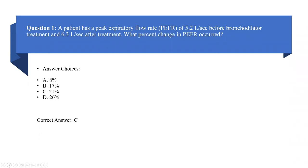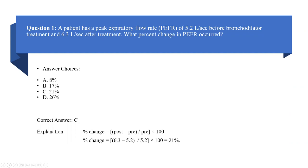The correct answer is C. The calculation for percent change is the post minus the pre — taking the absolute value — divided by the pre, times 100. So: 6.3 minus 5.2 over 5.2 times 100 equals 1.1 over 5.2, which equals 21%. It's a basic calculation — kind of a layup if you're okay with the math. I suspect one or two questions like this would appear on either the CPFT or the RPFT, particularly the CPFT.